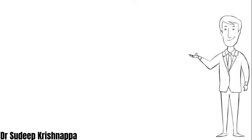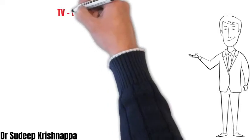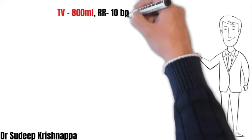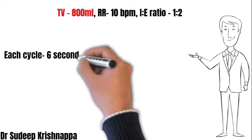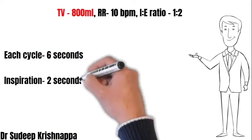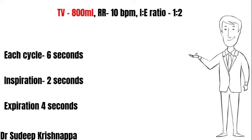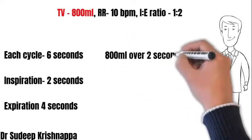Moving on to the second scenario: we change the tidal volume to 800 mL, keeping the respiratory rate and I:E ratio the same. Each cycle remains 6 seconds with inspiratory time of 2 seconds and expiratory time of 4 seconds. The tidal volume of 800 mL must be inspired over 2 seconds, translating to a flow rate of 400 mL per second.